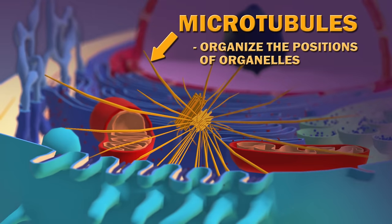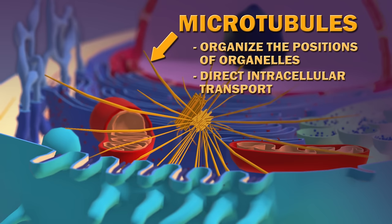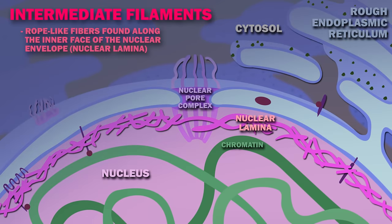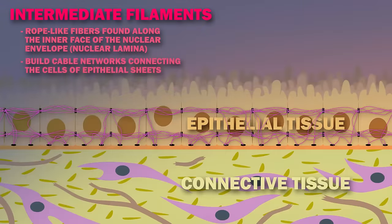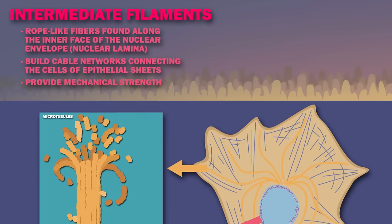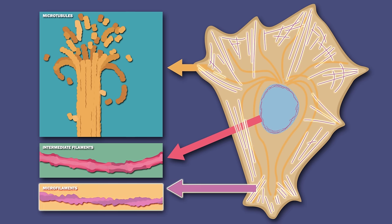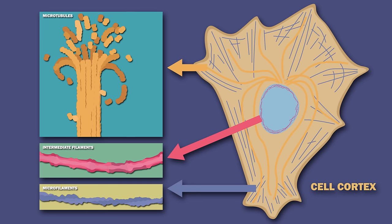Microtubules organize the positions of organelles and direct intracellular transport. Intermediate filaments are rope-like fibers found along the inner face of the nuclear envelope, and they also build a network of cables which connect the cells of epithelial sheets, providing mechanical strength. Microfilaments, or actin filaments, are most concentrated right beneath the plasma membrane, at the so-called cortex of the cell, and they control the outer shape of the cell and are important in locomotion.